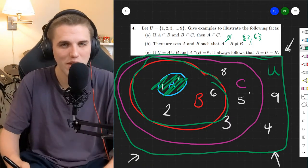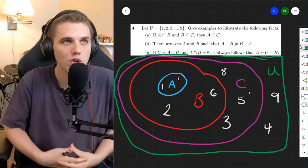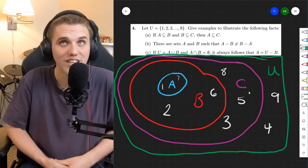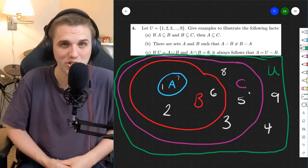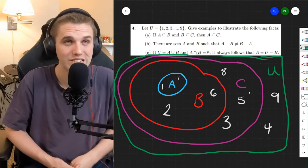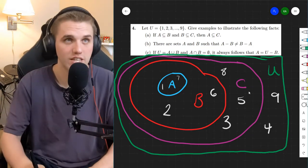What about part C? Maybe we can get 3 for 1. So if the universe is A union B. Uh-oh, that's already false with this picture. A union B is definitely not the whole universe. Okay, so let's try this again.